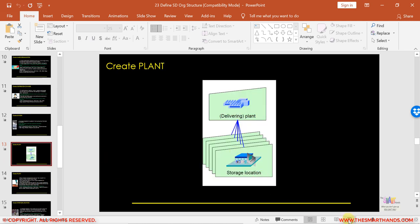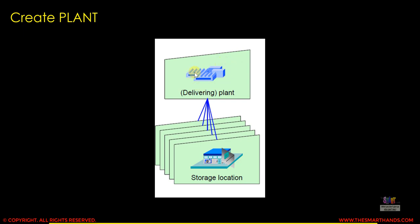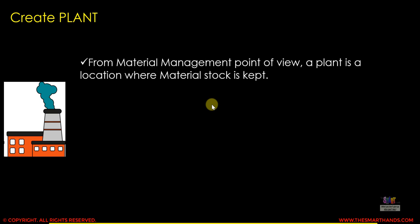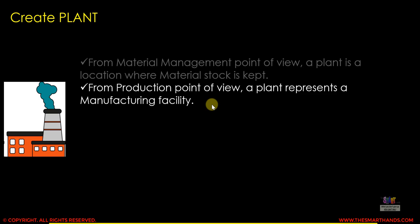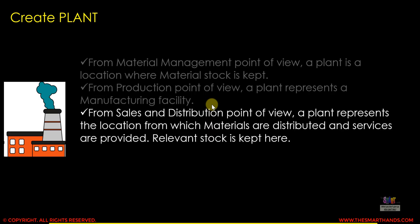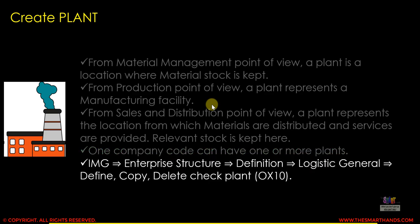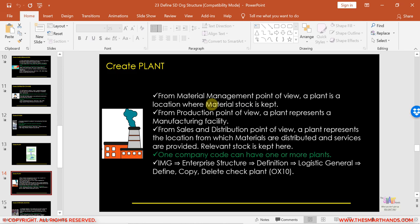Next is plant. A plant can have one or more store locations — a store location is a division of the plant, a different area within a plant. From Material Management point of view, a plant is a location where material stock is kept. From PP point of view, a plant represents a manufacturing facility. From SD point of view, a plant represents the location from which materials are distributed and services are provided. One company code can have one or more plants.